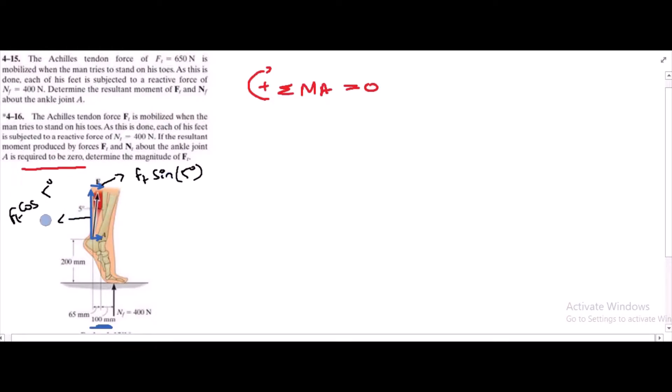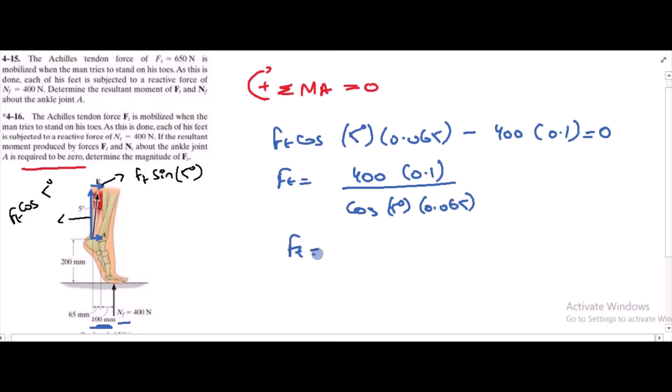By the same considerations, this vertical force Ft cos 5 degrees has a moment arm of 0.065 minus 400, the reaction force, into its moment arm which is 0.1, equals zero. Then Ft is equal to 400 into 0.1 divided by cos 5 degrees into 0.065.